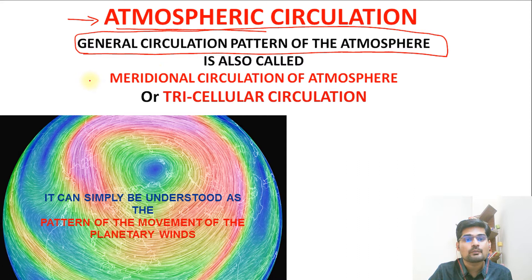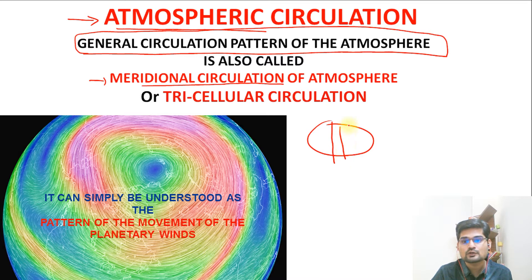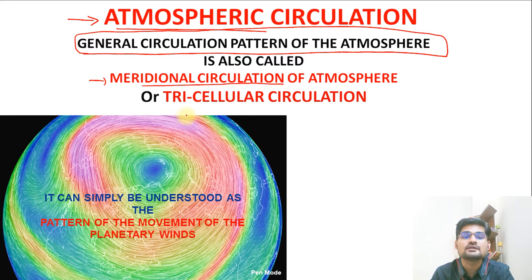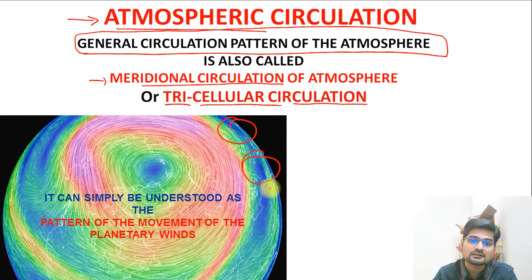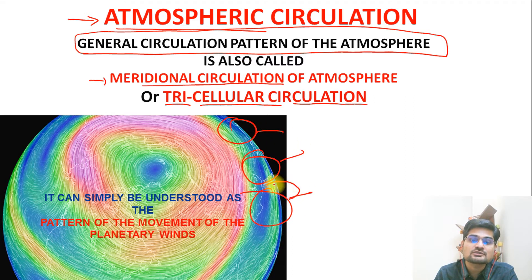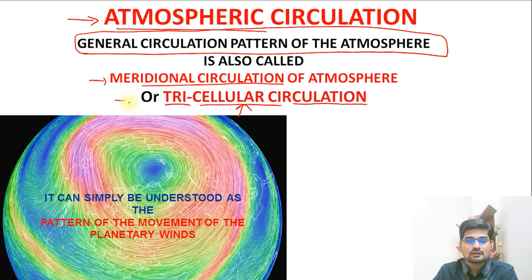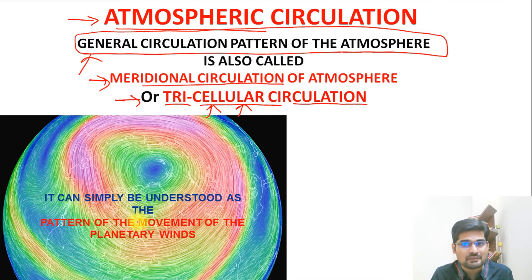The other names for this are meridional circulation — remember, meridians are lines of longitude running from pole to pole — so this describes how winds circulate from the equator to the poles on both sides. It is also referred to as tricellular circulation because there are three distinct cells in the atmosphere. Atmospheric cells are formed which lead to the transference of wind and movement of the entire atmosphere through these meridians.